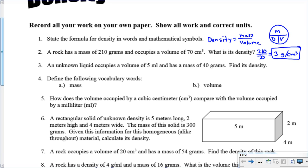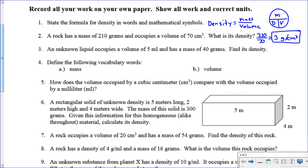Continuing on, this unknown liquid occupies a volume of 5 milliliters and has a mass of 40 grams. Find its density. This one, not too hard, you just take mass divided by volume, 40 divided by 5 gives you 8. In this case, it is grams per milliliter.